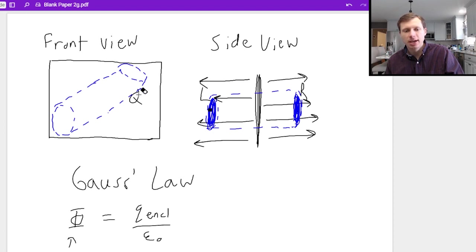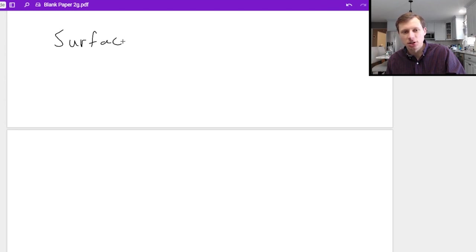Actually I want to change something. It doesn't make sense to have an infinite plate of charge with charge Q. Instead I'm going to say it has surface charge density sigma. So now let me quick explain what surface charge density is.